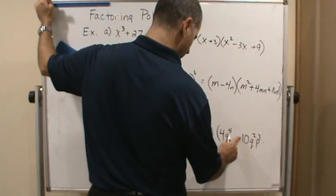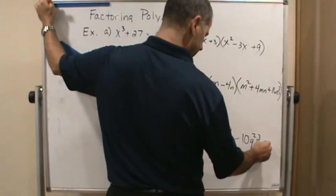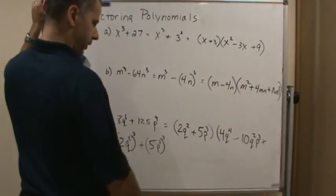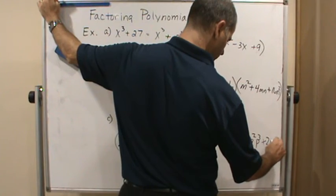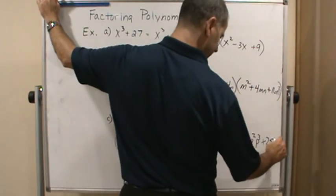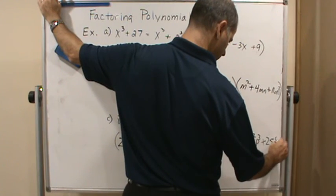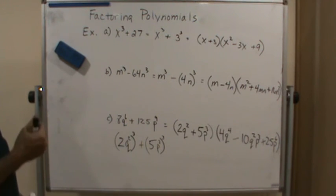Oh, this should be minus. And plus this squared, which is going to be 25 p to the sixth. And we're done. That's it.